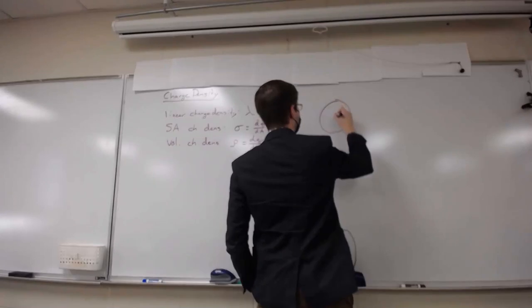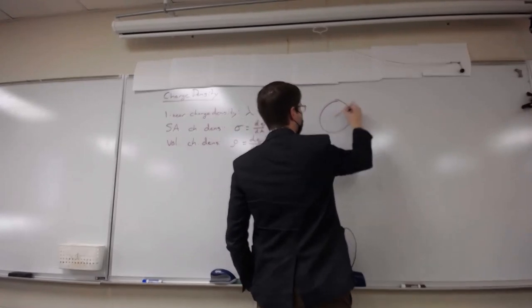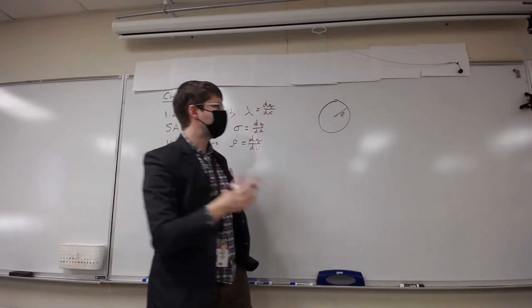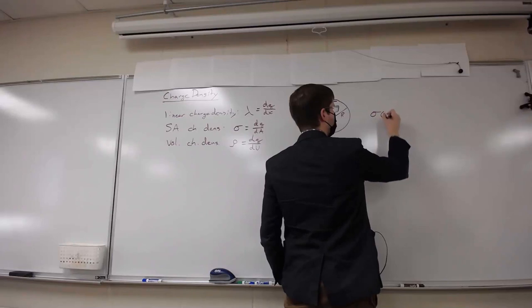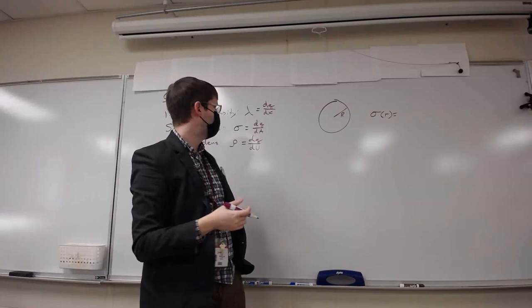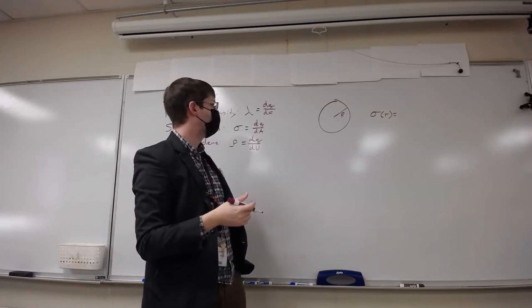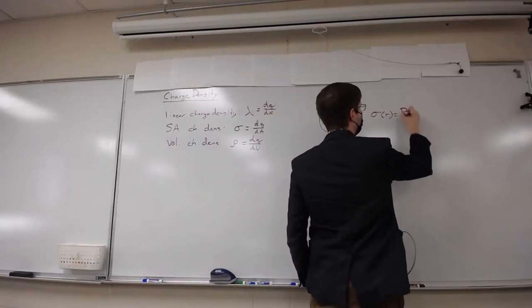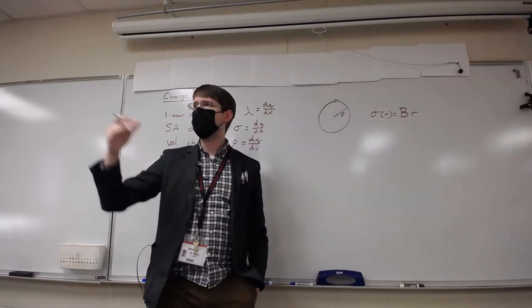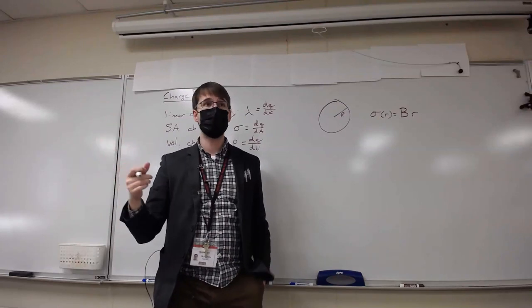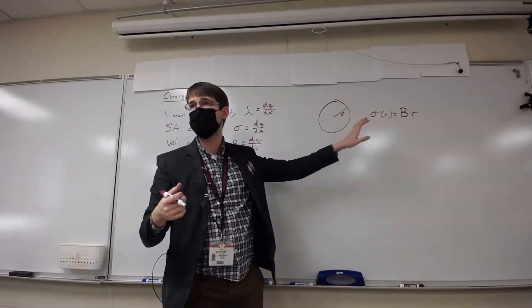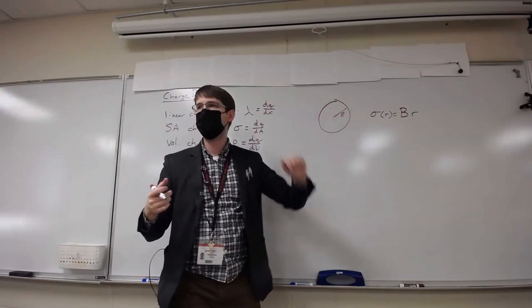If sigma were constant, we'd just multiply the area π r² by sigma to get the total charge. But let's say the disk is not uniformly charged — the charge changes with radius. We'll draw a disk with radius capital R, and say sigma is a function of r, equal to some constant B times r. So as we get farther from the center, there's more and more charge.